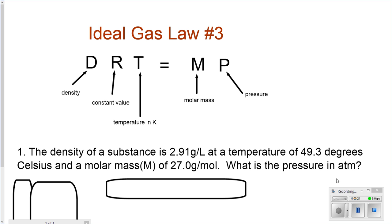This law, which is a derived law from the original ideal gas law, involves density. Out of the three variations, this is the only one that involves density. DRT equals MP. Of course, density is in grams over liters.